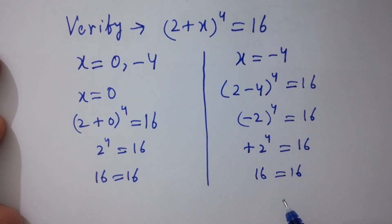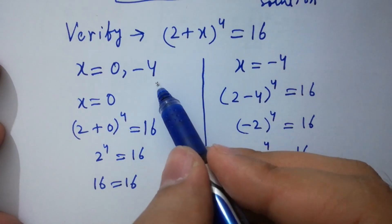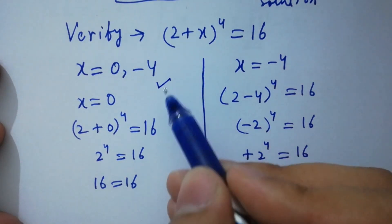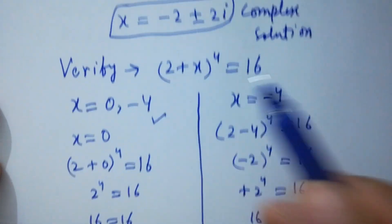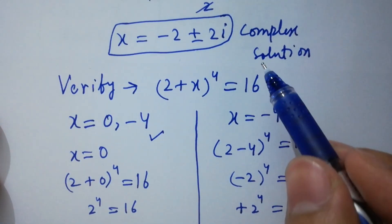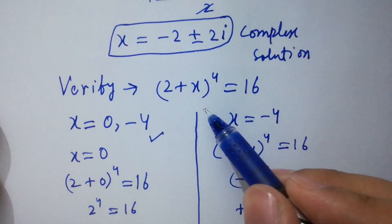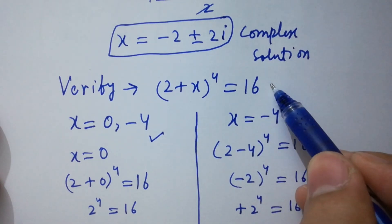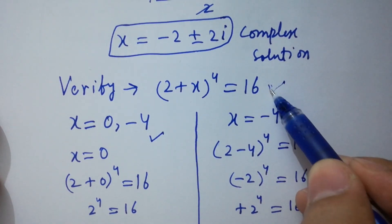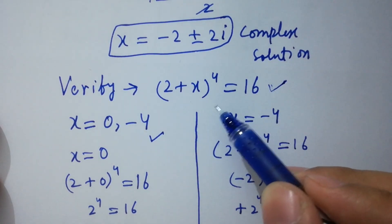This shows that the values of x, and also the complex solutions, satisfy the equation (2 + x) to the whole power 4 equal to 16.